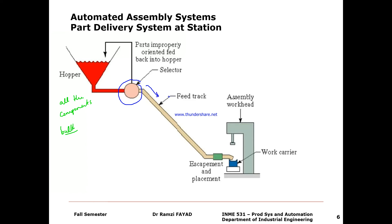We also have what's known as a parts feeder. The job of the parts feeder is to move the component from the hopper one at a time to the assembly work head. Then we have the feeder track — the feeder track works to move the component from the hopper and parts feeder to the location of the assembly work head.